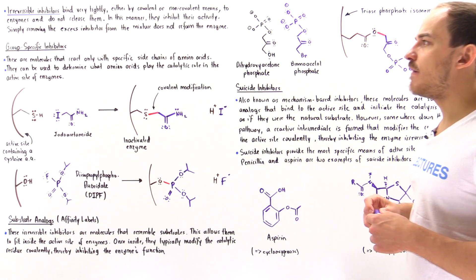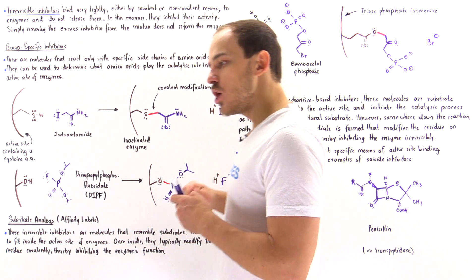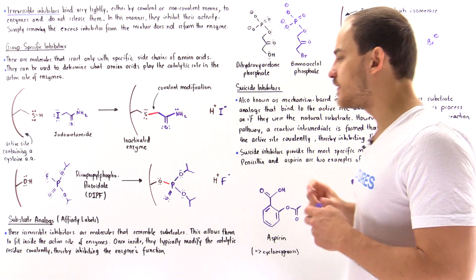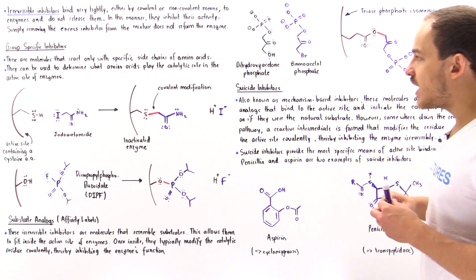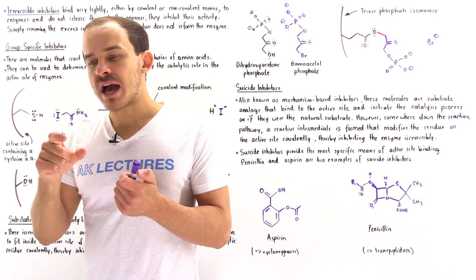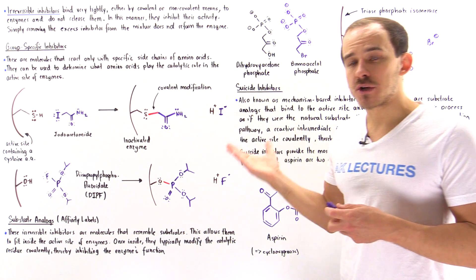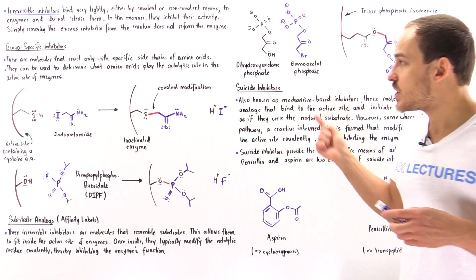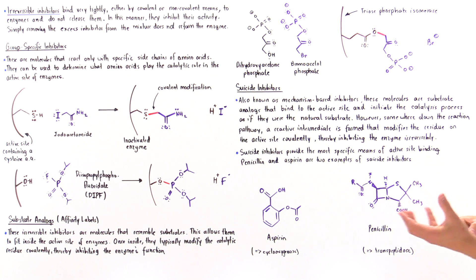The final category is suicide inhibitors, the most specific type of irreversible inhibitor. Suicide inhibitors are also called mechanism-based inhibitors because they bind onto the active site and begin the normal catalyzation process as if they were a normal substrate. However, somewhere down the reaction pathway, the suicide inhibitor produces a reactive intermediate that covalently modifies the active site, irreversibly inhibiting the enzyme.